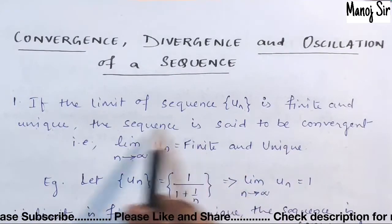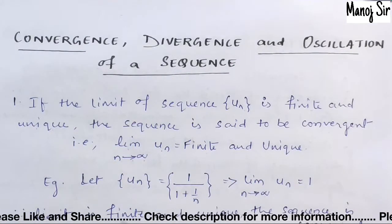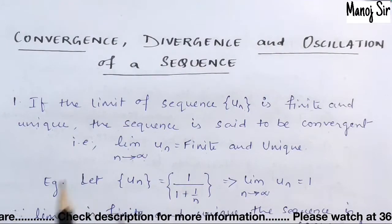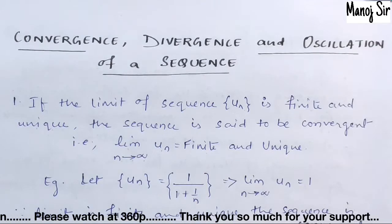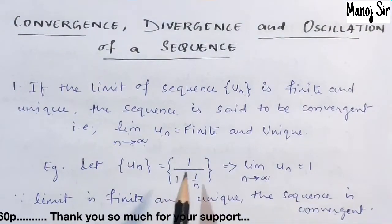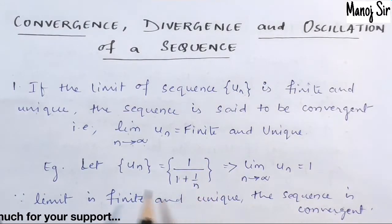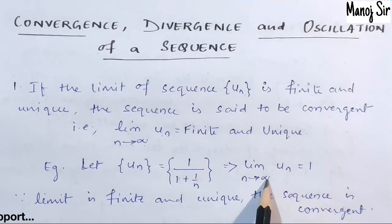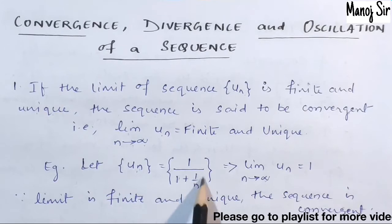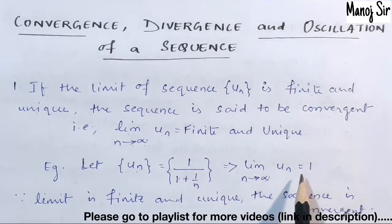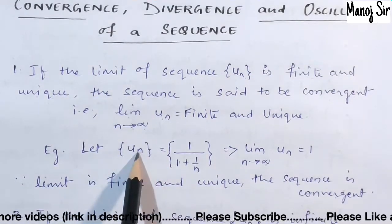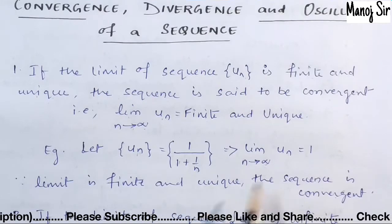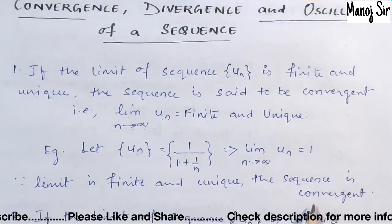Let's take one example. Suppose UN equals 1 upon (1 plus 1/N). We take the limit as N tends to infinity of UN. Putting N equals infinity, 1/N becomes 0, so we get 1 upon 1, which equals 1. The limit is finite and unique, so this sequence is convergent.